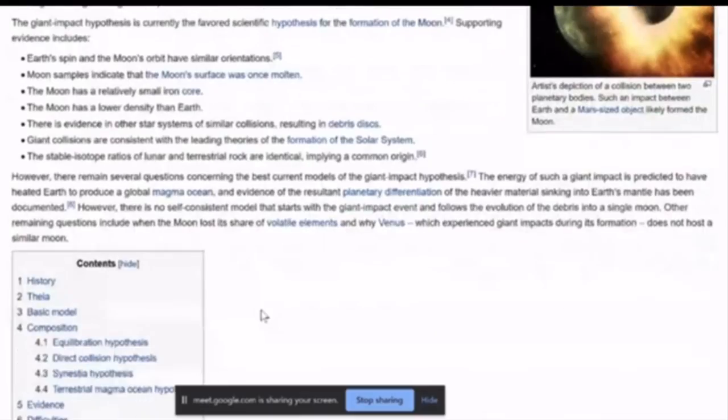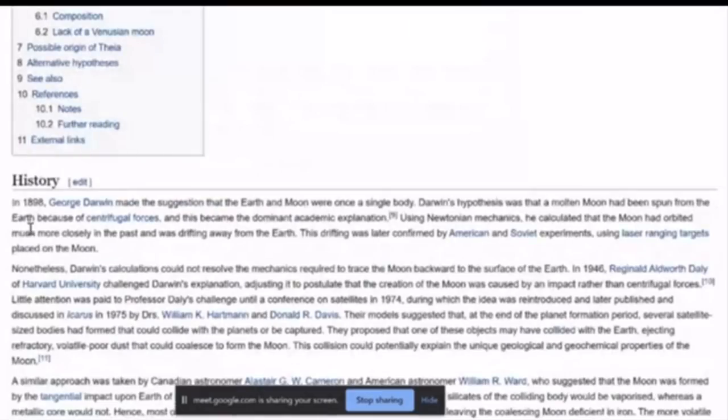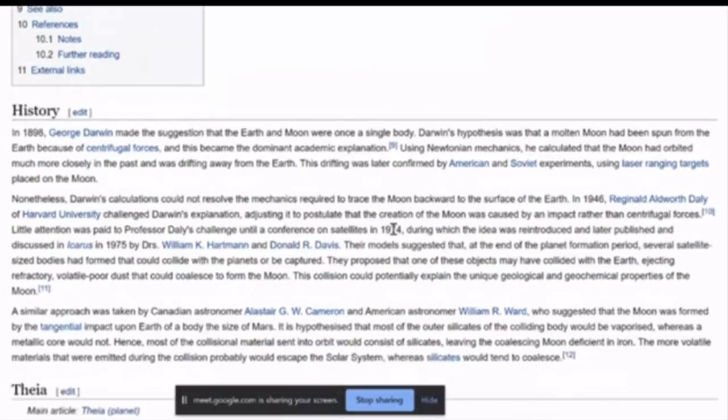It appears to be in 1898 George Darwin made the suggestion that Earth and Moon were once a single body. Darwin's hypothesis was that the molten Moon had been spun from the Earth because of centrifugal forces. So it starts with this by the looks of it, and then as always he elaborates.